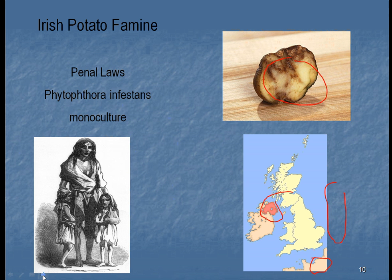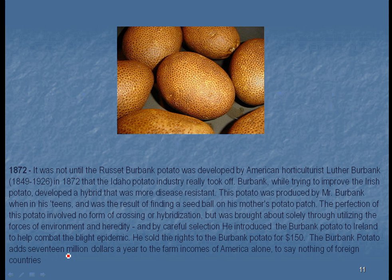As we go on, we're going to see that relying on a single variety is something we try to avoid today. In 1872, the Russet Burbank potato was developed. Luther Burbank was just a kid when he noticed that some plants in his mother's garden seemed more resistant to fungus and to bugs. By using cloning techniques and careful selection, he introduced the Russet Burbank potato. It's extremely popular today. He sold the rights for $150 — you can imagine what that would be worth nowadays.